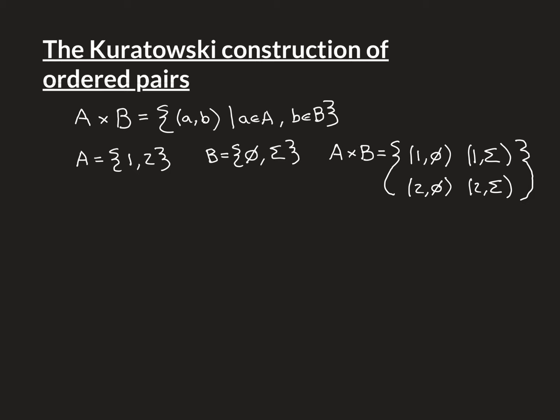So how do we do this? Here is the answer — these are the Kuratowski constructions of ordered pairs. Let's look at some examples. For the ordered pair (1, φ), the way this is actually constructed is as a set — of course it's going to be a set, because those are all we've got. It's going to be the set containing two sets: the set containing just the element 1, and the set containing both 1 and φ.